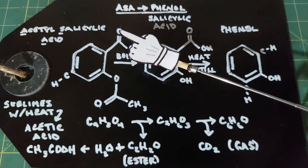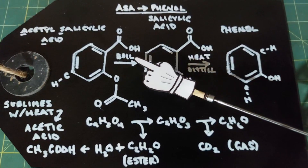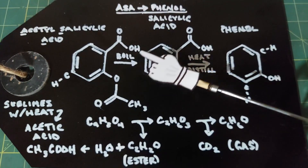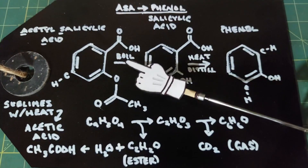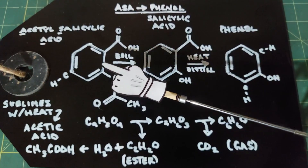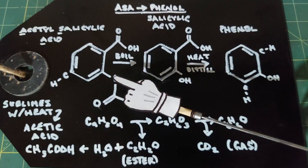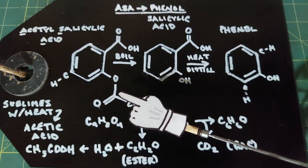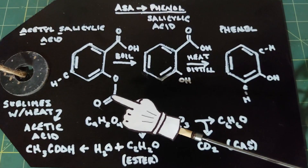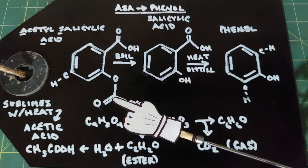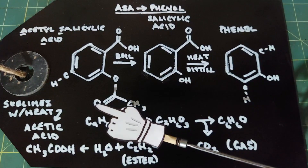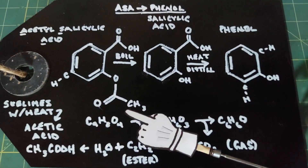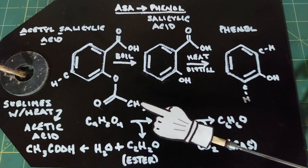To that carbon there is a double-bonded oxygen and then a single bond going to an OH group. This group is called a carboxyl group. At another carbon, there's a single bond to an oxygen, and that oxygen is single-bonded to a carbon in the corner. That carbon is double-bonded to an oxygen and single-bonded to a carbon and three hydrogens.